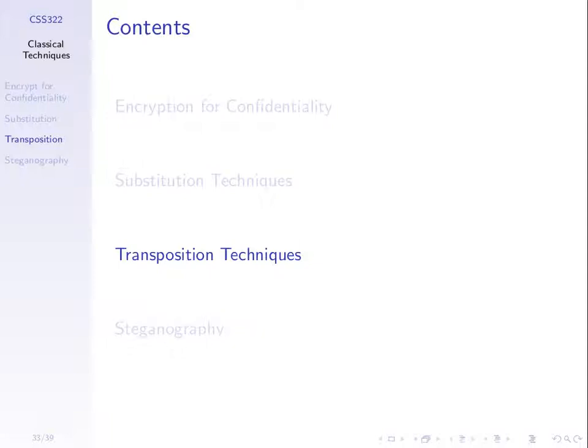The only problem with the one-time pad is that the key must be as long as the plaintext. If I want to encrypt a large file, my key must be the same length as that file. There are two problems: distributing large keys is hard, and generating long sequences of random bits is not easy. It's sometimes quite challenging to create a truly random sequence of bits. So the one-time pad is what we call unconditionally secure — under no conditions can you break it — but it's not practical to use. We need to make a trade-off of maybe less secure but more practical.